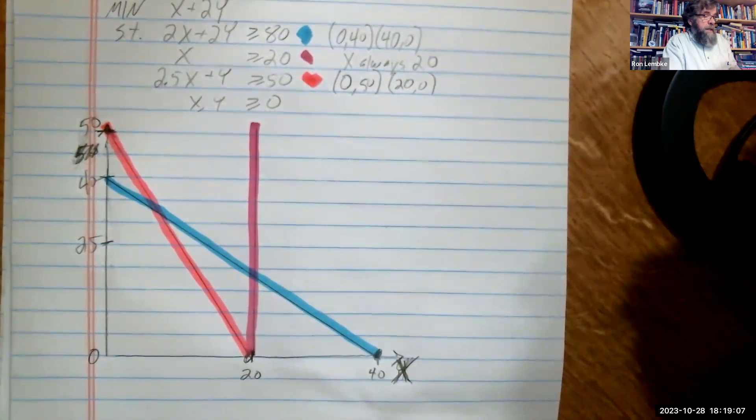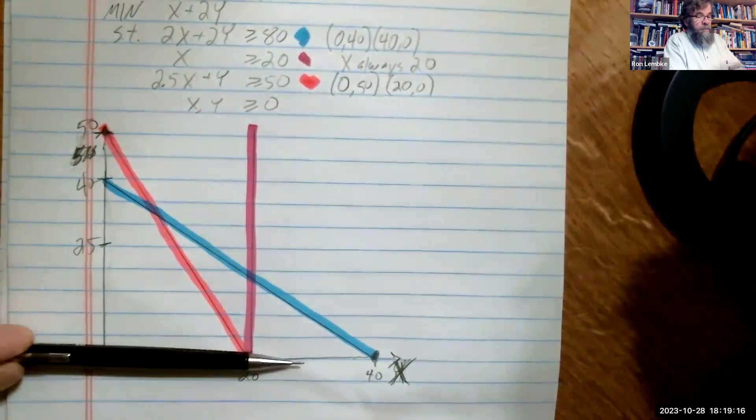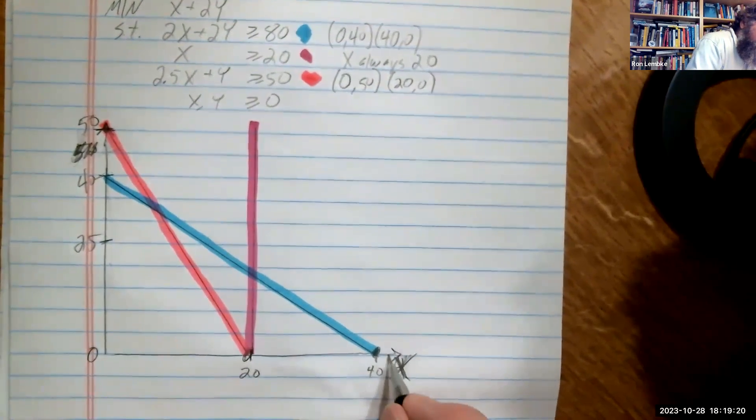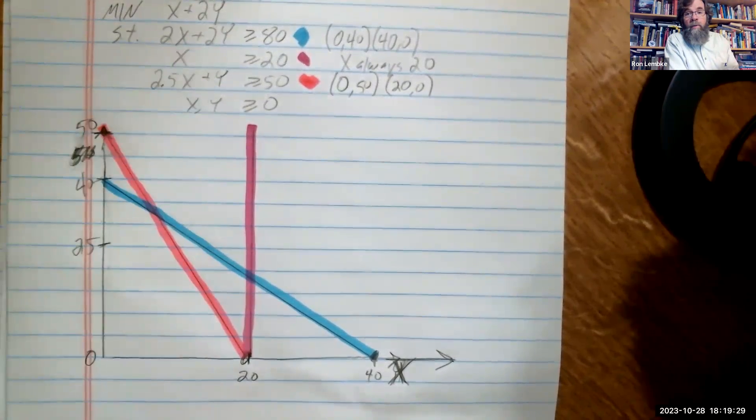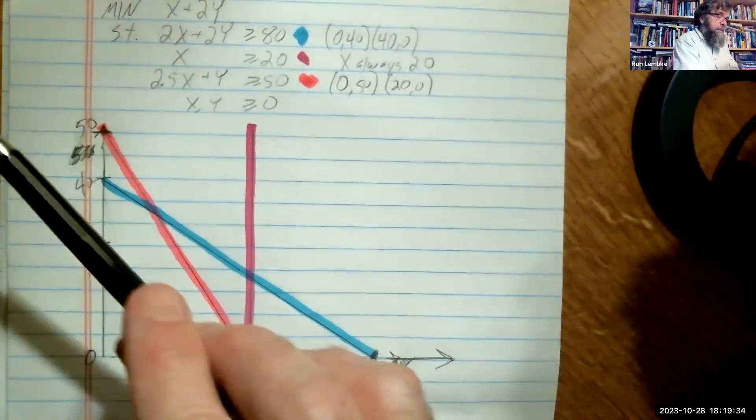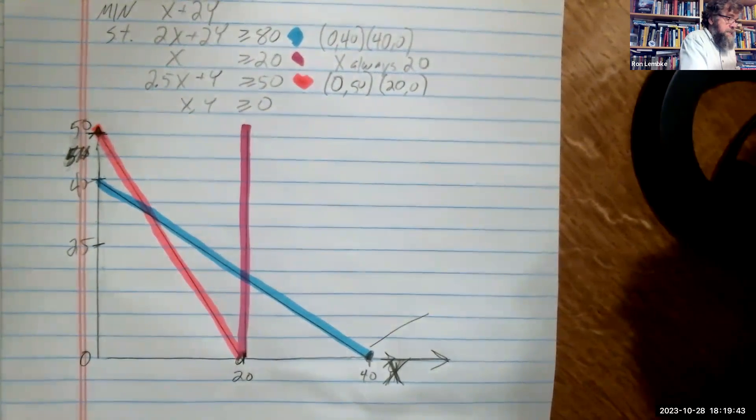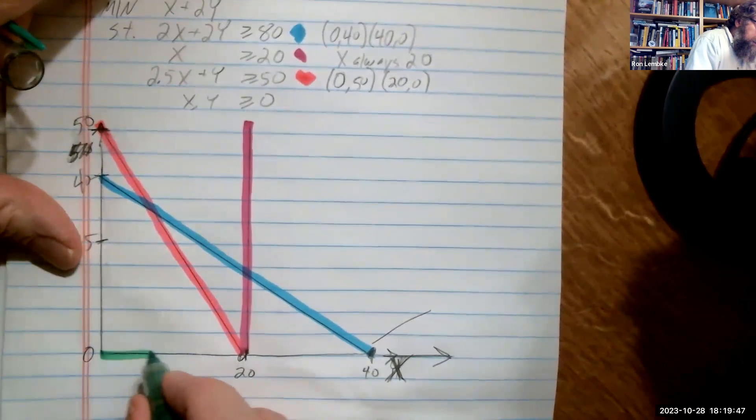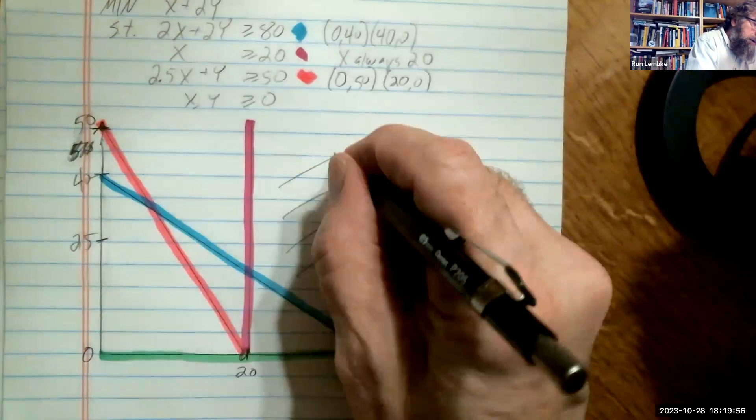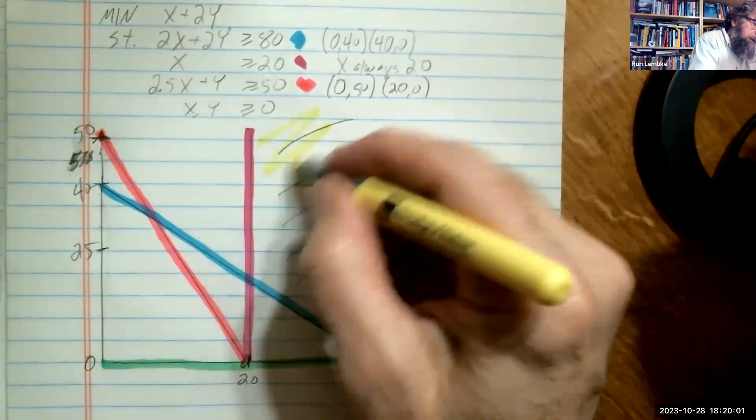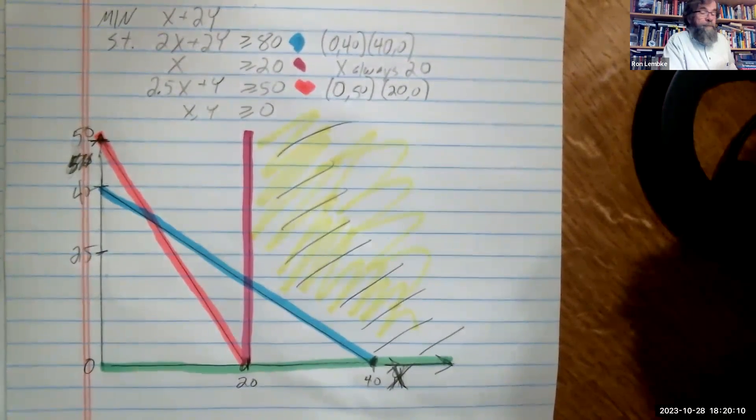And then we do have the non-negativity constraints. x cannot be negative, so our vertical axis is one constraint. Similarly, our horizontal axis is the other constraint that prevents y from going negative. We have to be mindful of the direction of these constraints, and they are all greater than or equal to. That means we have to be on the blue line or above it, on the pink line or above it, and on the purple line or above it. So that means our feasible region is this area to the right of the purple and above the blue and above the green. So that area I colored in yellow there is our feasible region.